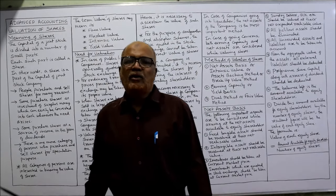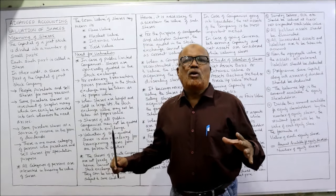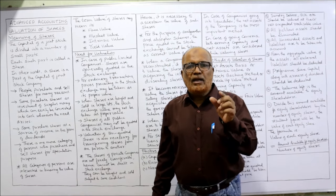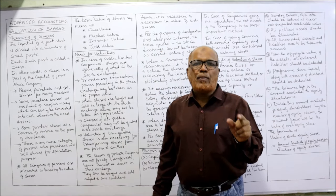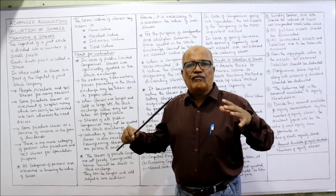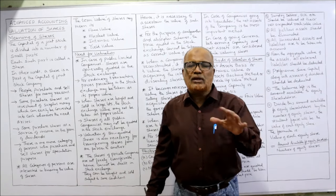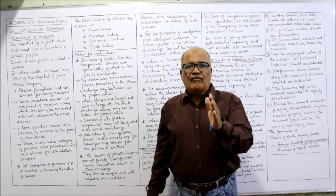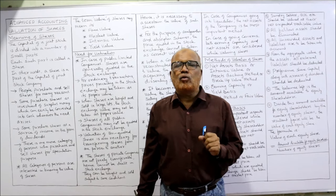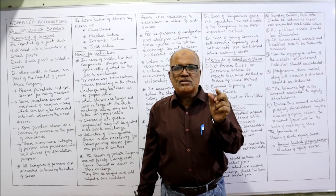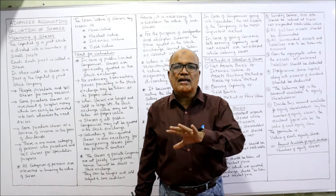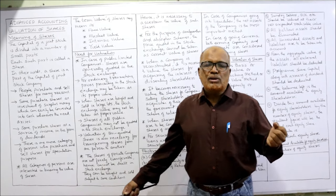Now first of all, what is the meaning of the term share? The capital of a limited liability company or a joint stock company is divided into a number of parts. Each such part is called a share. For example, if the total capital is 10 lakh rupees and we divide it into 1 lakh parts, each part consists of 10 rupees. So in simple words, a share means a part of the capital of a joint stock company.